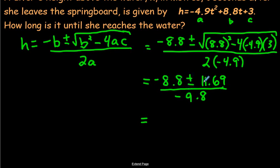So I'm just going to continue on this question. If you go -8.8 plus 11.69, take that answer and divide by -9.8, and then you do the opposite: you go -8.8 minus, because it says plus or minus here, if you subtract 11.69 and then divide by -9.8.